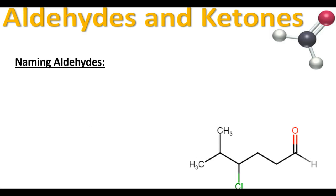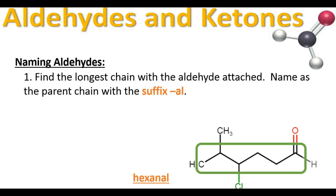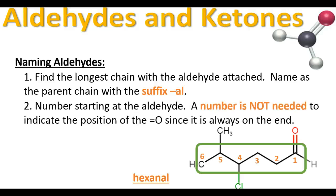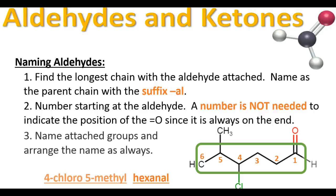Let's go over naming some aldehydes. The first thing is to find the longest chain and name the parent chain with the suffix -AL. We have a six carbon chain here with an aldehyde and no double bond, so we name it hexanal. A number is not needed to indicate the position of the double bonded oxygen since it's always on the end. We also have a chloro on the fourth carbon and a methyl on the fifth, so in alphabetical order: 4-chloro-5-methyl-hexanal.